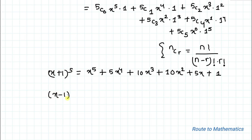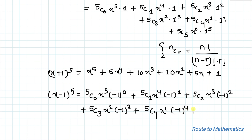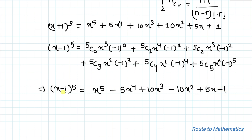Now the second term is (x-1)^5. Similarly applying the binomial theorem with b = -1: 5C0·x^5·(-1)^0 + 5C1·x^4·(-1)^1 + 5C2·x^3·(-1)^2 + 5C3·x^2·(-1)^3 + 5C4·x·(-1)^4 + 5C5·(-1)^5. The expanded form of (x-1)^5 is x^5 - 5x^4 + 10x^3 - 10x^2 + 5x - 1.